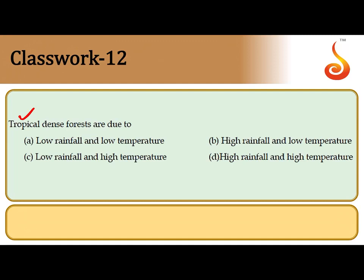The 12th question is about dense tropical forests. In tropical regions there is very high temperature and associated with that the highest annual precipitation or rainfall. So the correct answer is high rainfall and high temperature — that is option D.